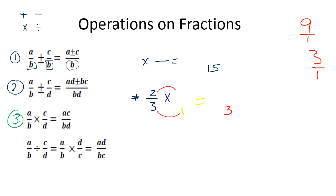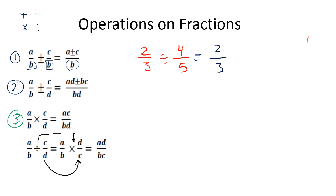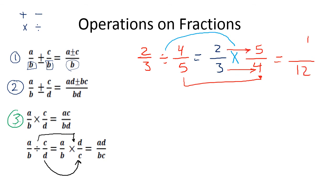Finally, the division operation — division is the reciprocal of multiplication. All you have to do is flip the second fraction and change the division sign to multiplication. For example, two over three divided by four over five: write down two over three, change division to multiplication, then flip four over five to become five over four. Multiply to get ten over twelve, then simplify by dividing by two, giving a final answer of five over six.